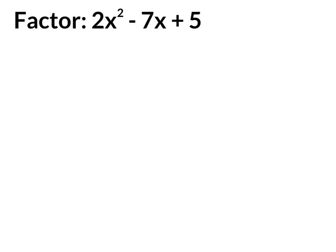So we're going to begin by identifying the a, b, and c terms of this quadratic. a equals 2, b equals negative 7, and c equals 5.